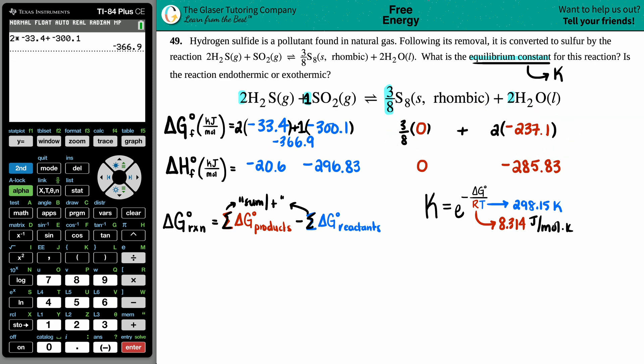The total for the product side, I just have to take 2 times -237.1 because anything times zero is zero. The overall products would be -474.2.